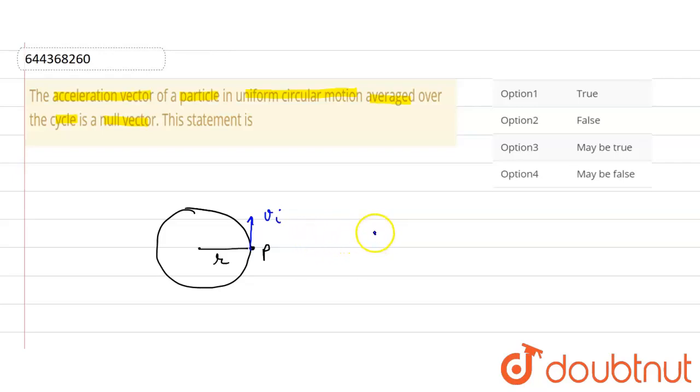Also, it is performing uniform circular motion, so this means that the velocity final will also equal to velocity initial because it is performing a uniform circular motion. So with this, we can see that change in velocity will be equal to zero.